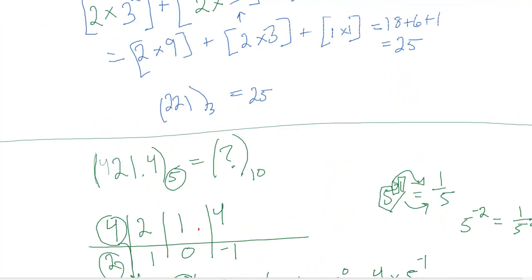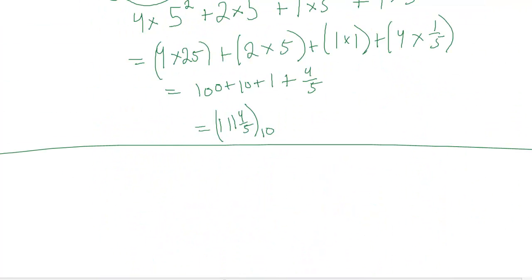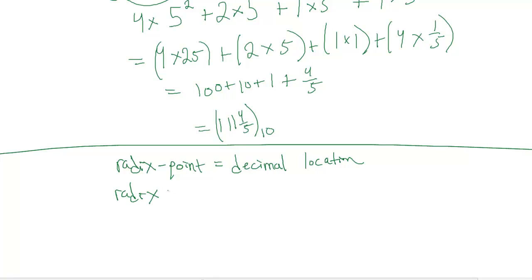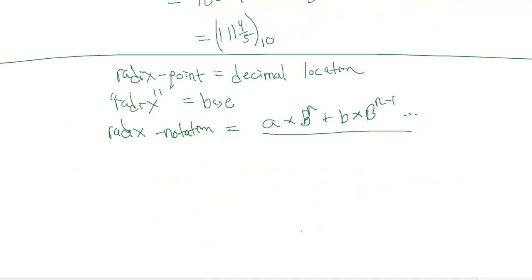So that is our notation. Remember, we have three concepts. We have the radix point, which is equal to the decimal location. We have radix, which means the base. And this notation, which looks something like a times the base times where you are, plus b times, b times n minus 1, and you keep going on and on until you've covered all values. That's the formal mathematical notation that we were describing above.